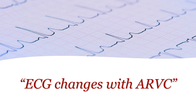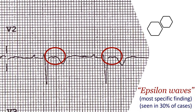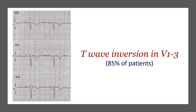Let's talk about the ECG changes in ARVC. The first abnormality is those notches at the end of the QRS complex at the beginning of the ST segment — these are called epsilon waves. They are the most specific finding in ARVC but are seen in only 30% of cases. The other finding is T-wave inversion in V1 to V3, seen in about 85% of patients. All findings are in the right precordial leads V1 to V3 because the main problem is in the right ventricle.